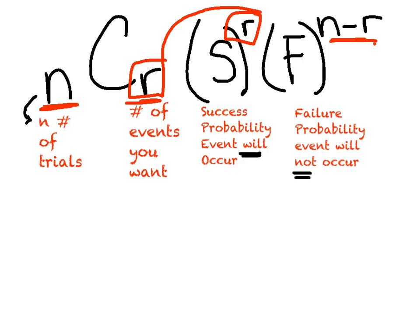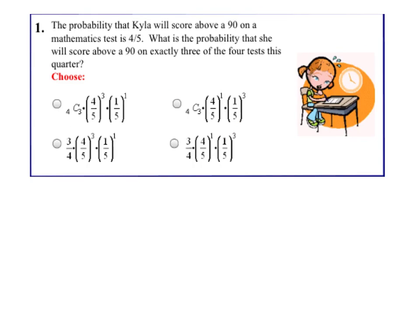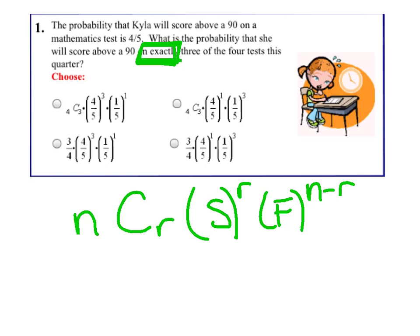Let's dive right in. We're going to start with just a nice multiple choice question, looking for the setup of the question. The probability that Kayla will score above a 90 on a mathematics test is 4 out of 5. What is the probability she will score above a 90 on exactly 3 out of 4 tests this quarter? Our key word is exactly. That is the word I'm looking for. That word right there tells me I can use the formula we just talked about. nCr, success to the r, failure to the n minus r. And again, the more times you say it to yourself and write it down, the easier it will become. Remember, this r and this r should be the same.